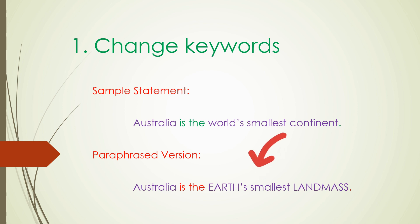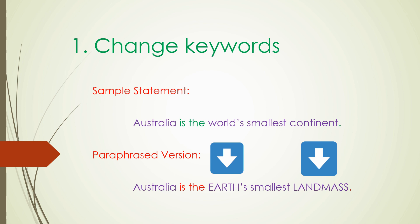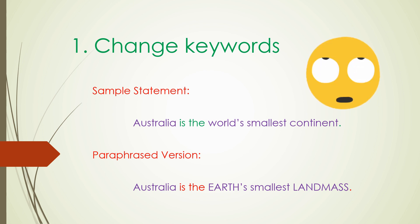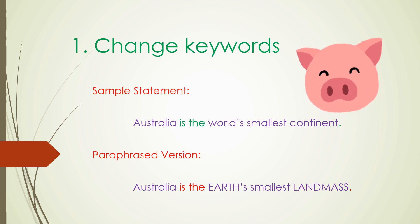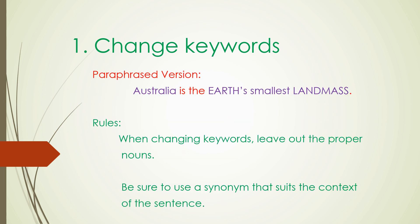Now, read the sample paraphrase. Notice the ones in purple written in all caps? They are the keywords which I replaced with synonyms. The word 'world' was replaced with 'earth,' and the word 'continent' was substituted with 'landmass.' But what about Australia and smallest? They are keywords too, right? In changing keywords, remember that you do not have to replace every keyword in a sentence. The first rule says: leave out proper nouns. In this case, Australia is a proper noun, so you don't need to replace it.